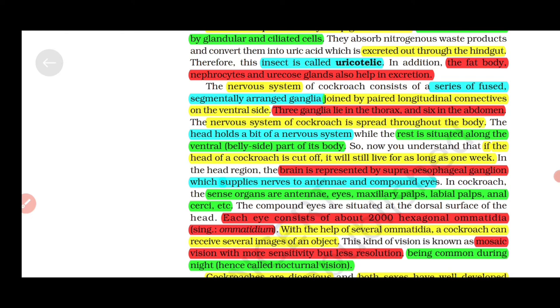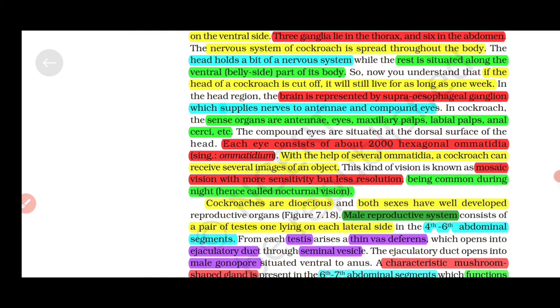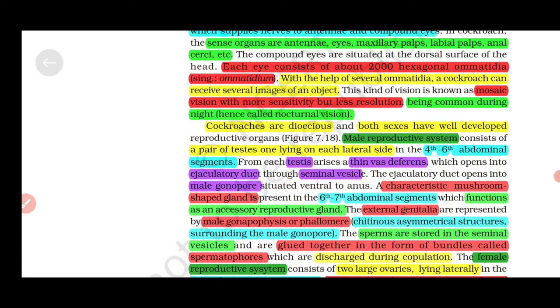The brain is represented by supra-esophageal ganglion which supplies nerves to antennae and compound eyes. Sense organs are antennae, eyes, maxillary palps, labial palps, anal cerci, etc. Each eye consists of about 2000 hexagonal ommatidia. With the help of several ommatidia, a cockroach can receive several images of an object. This is called mosaic vision with more sensitivity but less resolution, being common during night, hence called nocturnal vision.